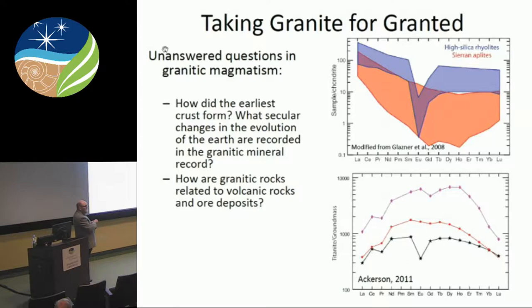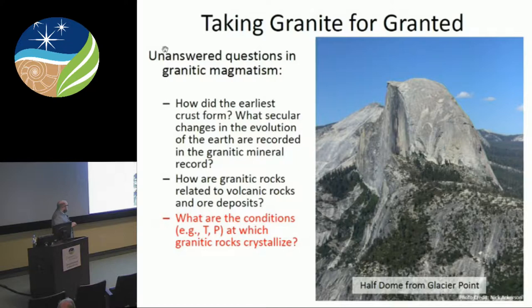Some people think the residues are aplites — fine-grained, late-stage veins that occur in granites. But if you look at the rare earth element signature, they're very different, so these rocks actually form through different processes. We're using these and other techniques to try to understand the relationship between volcanic rocks that explode from the crust and plutonic rocks that just cool slowly through the crust.